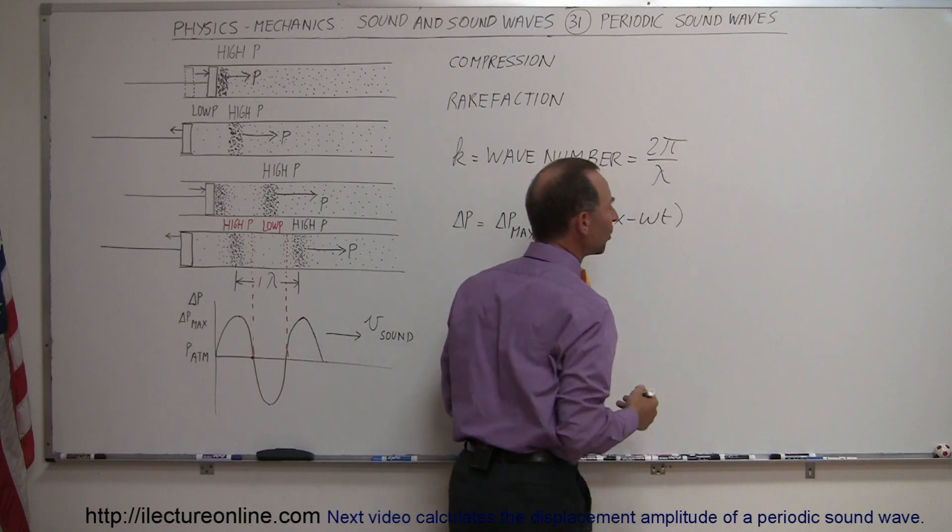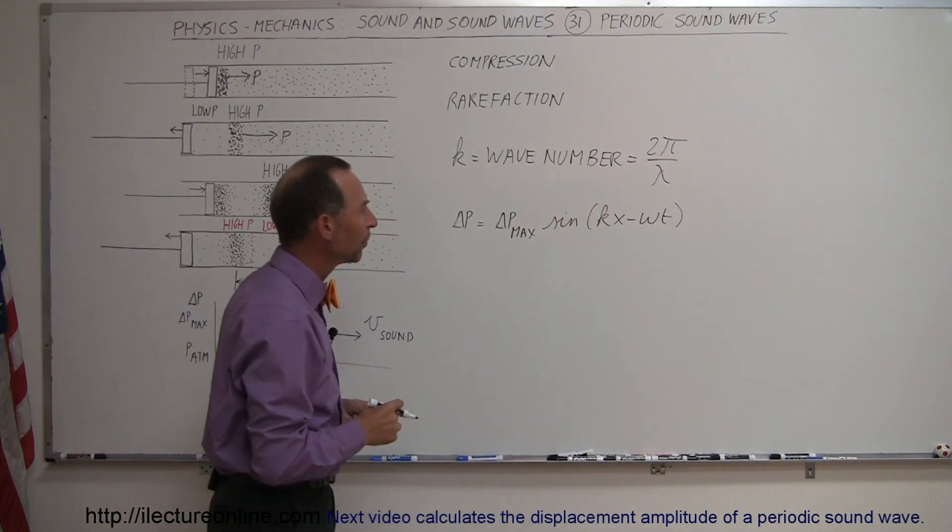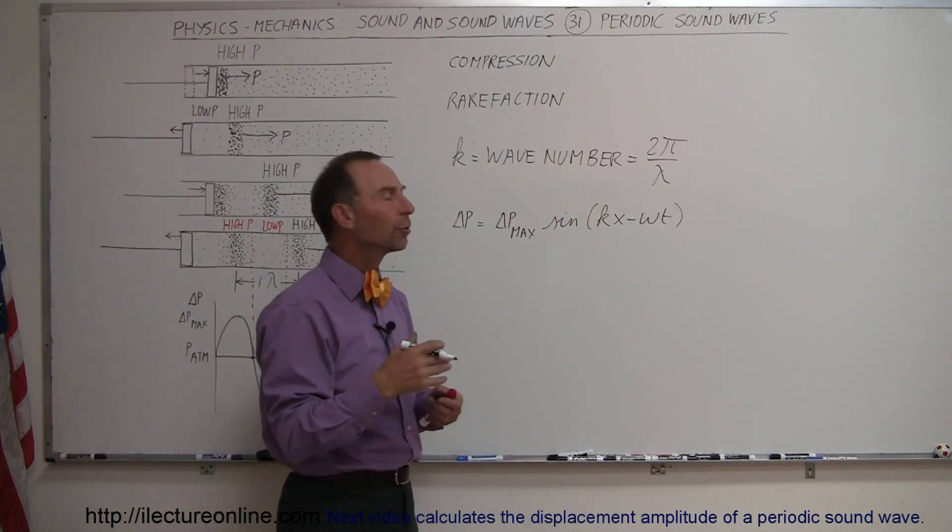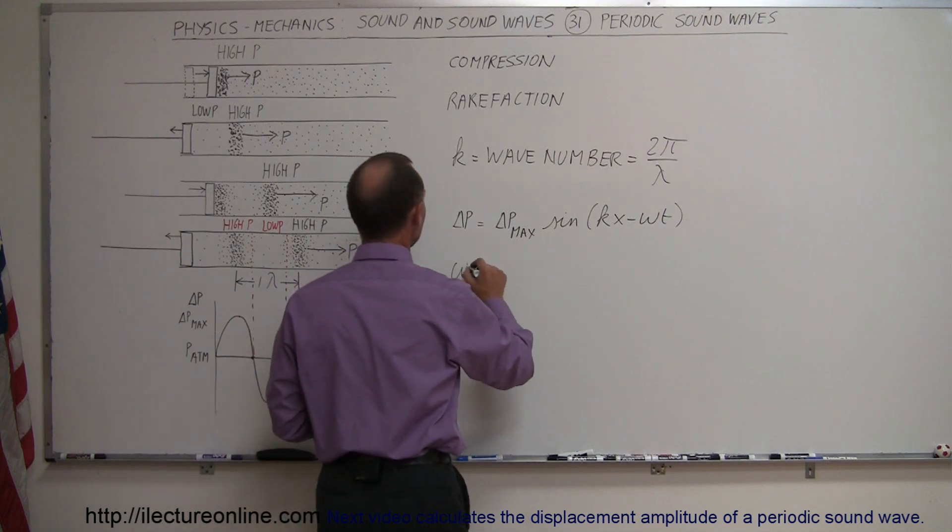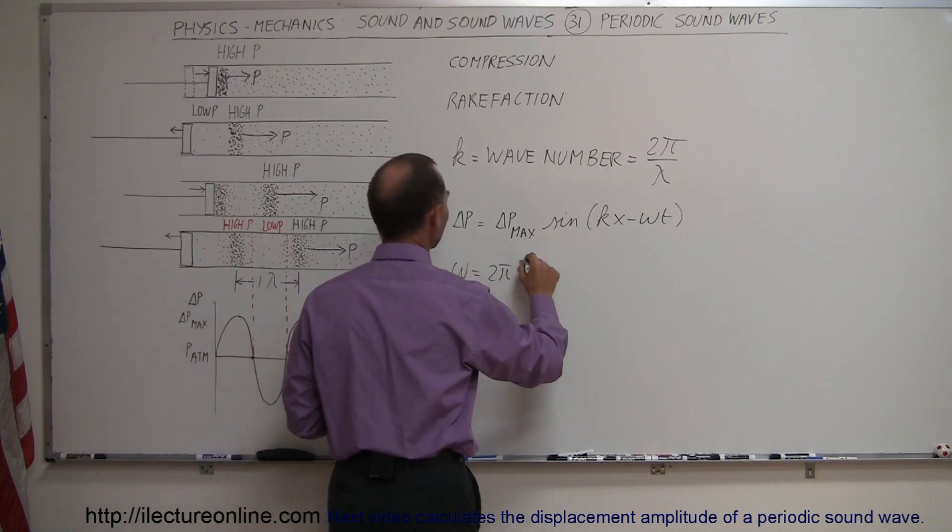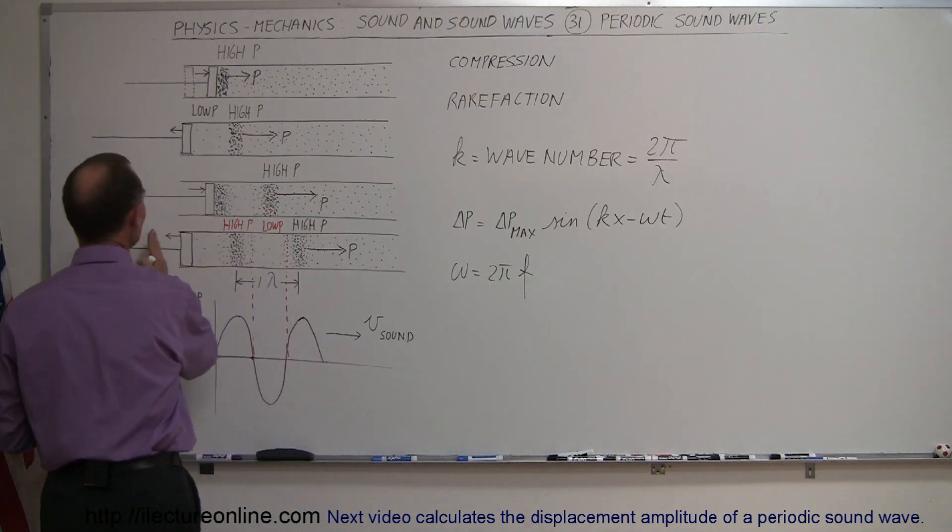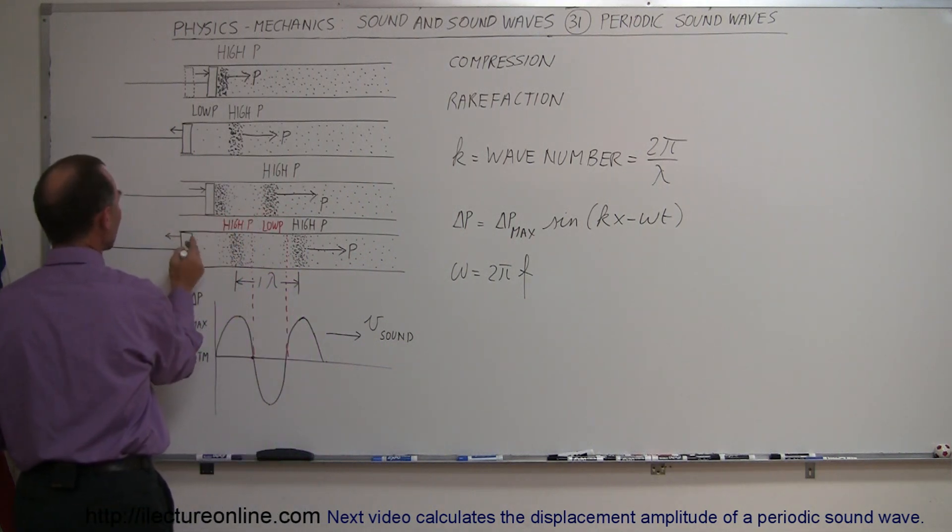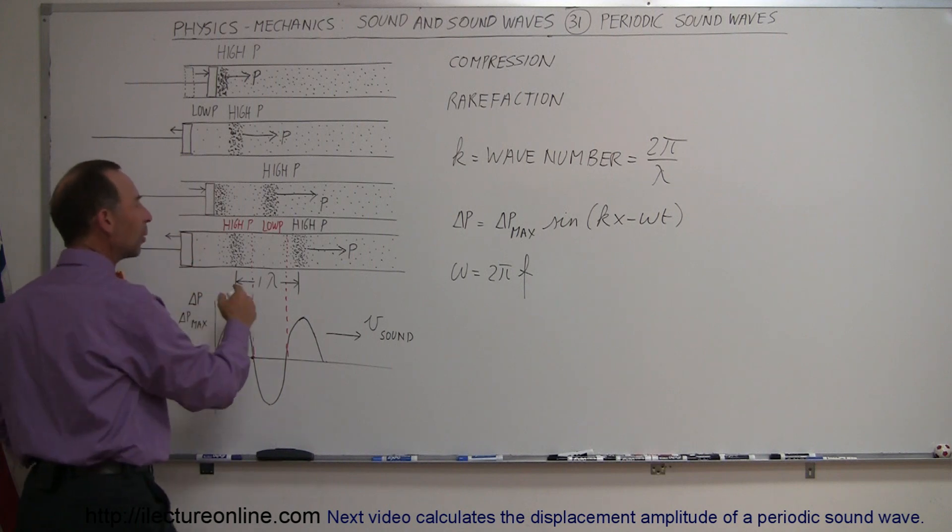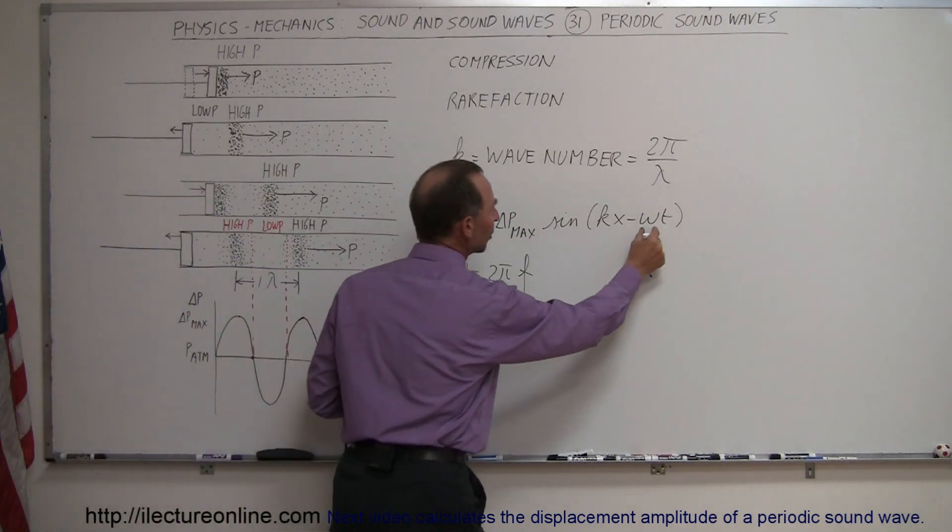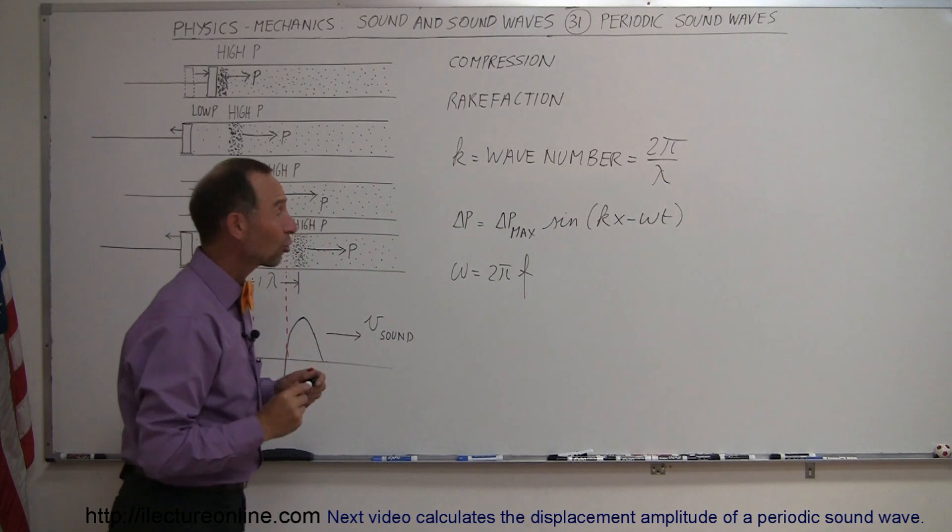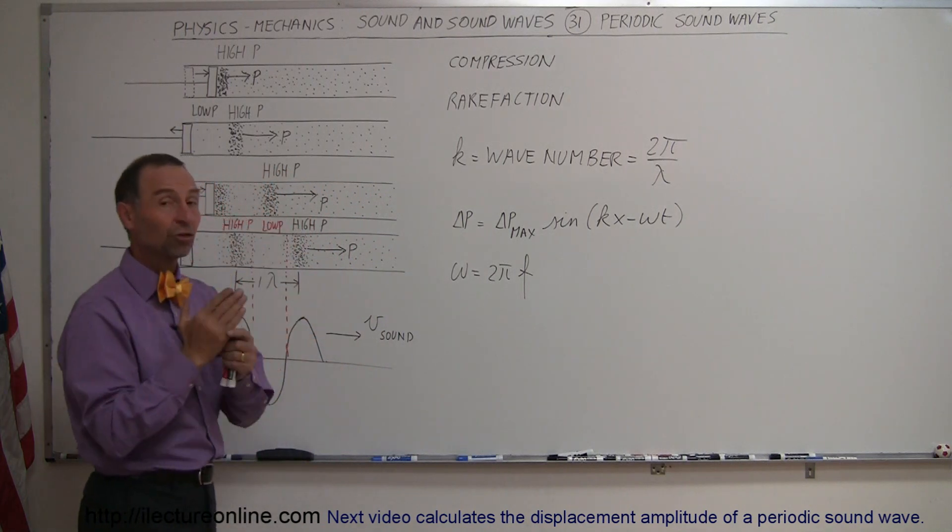Omega is the angular frequency, equal to 2π times the frequency of the oscillation. So if the frequency of the oscillation of the piston is f, then omega would be 2πf, and that's what goes in here.